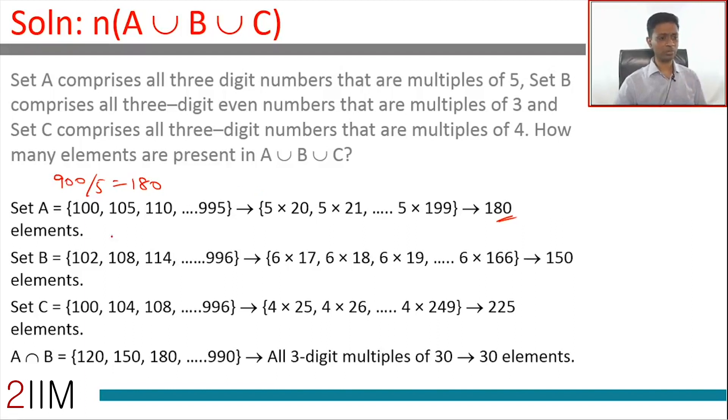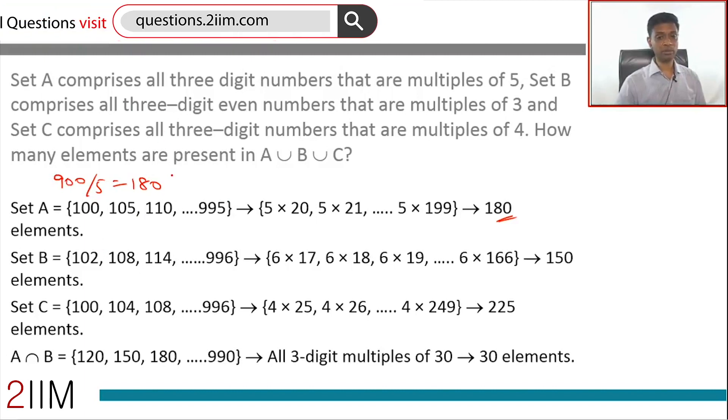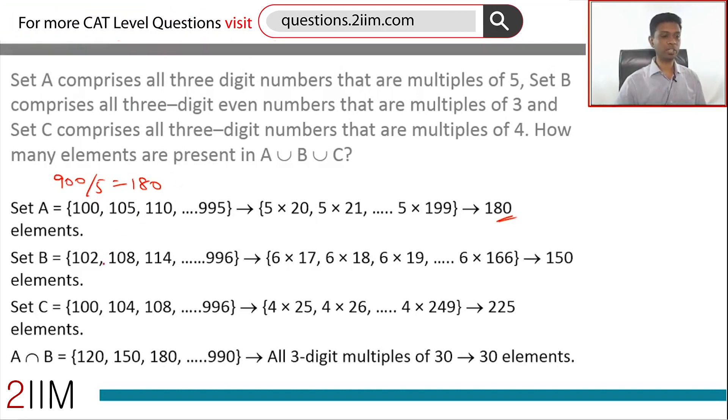Set B: we're talking about all three-digit even numbers that are multiples of 3, or we're counting multiples of 6. 900 numbers, how many multiples of 6 will be there? 150. Set C: we're looking at multiples of 4. 900 by 4 is 225. This is 900 by 6—even multiples of 3, effectively multiples of 6.